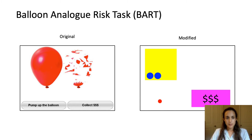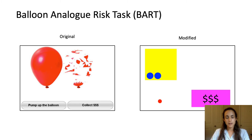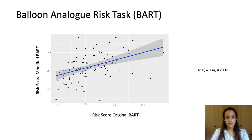First, we asked human participants to complete both versions of the task. In the modified task, instead of a balloon there was a yellow rectangle that they had to bring a cursor to in order to collect tokens instead of inflations, and they could use a bright pink cash-out button whenever they wanted. Both the original and the modified version were set to a maximum of 16 inflations so the ratio was the same. We did find a correlation between the two tasks, so we were confident the modified version was measuring similar characteristics.